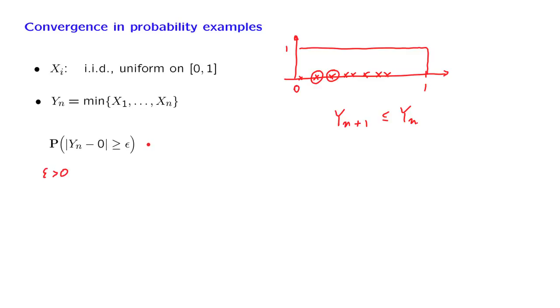Now, because Yn is a non-negative random variable, this is the same as the probability that Yn is larger than or equal to epsilon.